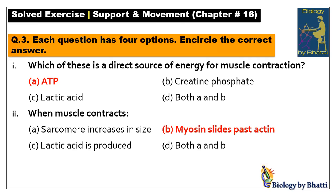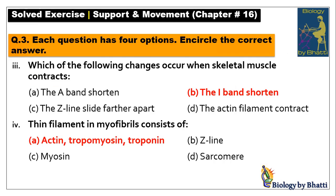Number three: which of the following changes occur when skeletal muscle contracts? The size of I-bands shortens; the A-band does not change in size. Z-lines come close to each other, not further apart. Actin filaments slide over myosin, not the other way. Number four: a thin filament in myofibrils consists of three proteins — actin, troponin, and tropomyosin — so the answer is option A.